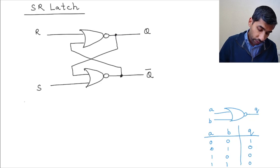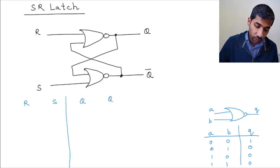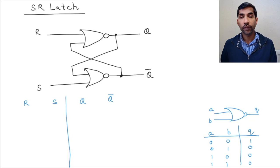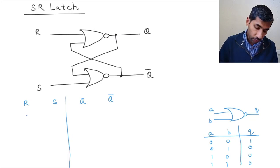So let's write the truth table of this latch by writing the inputs here, and then let's write the outputs Q and Q bar here. And of course you will have different combinations: RS equal to 0, 1, 1, 0, and 1, 1.